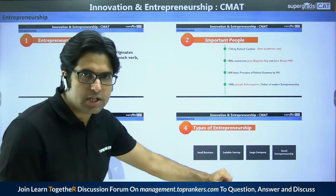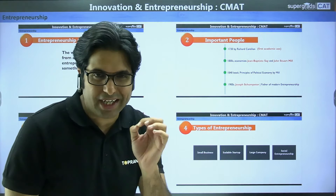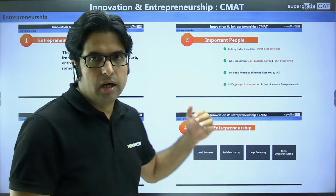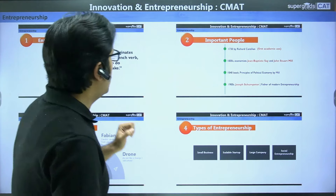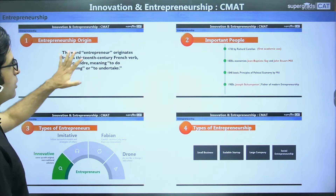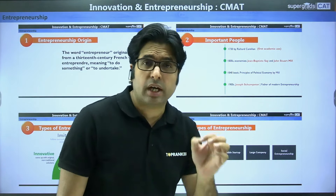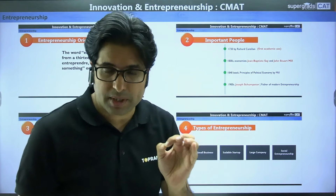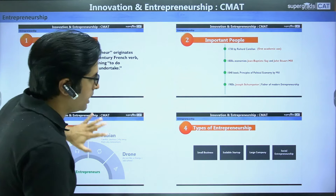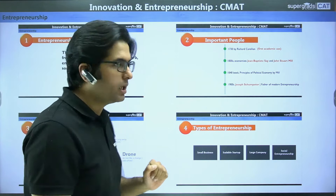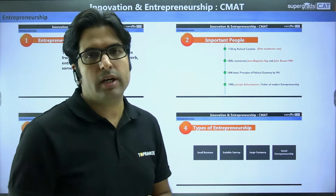So broadly we will cover four areas. Make sure that you remember a lot of stuff from this session. Make notes. If required, please share your Gmail ID in the comments and we'll share the PDF of the corresponding discussion. We'll start in four areas: the origin of entrepreneurship, the important people associated with the term, and the types of different entrepreneurs — last year there was a question on types of entrepreneurs — and finally the different broad classifications of entrepreneurship.